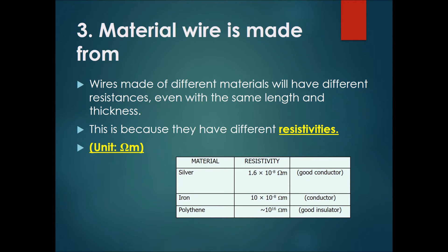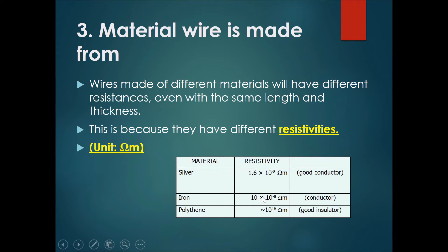The third factor is the material the wire is made from. Wires made of different materials may have different resistances even if they have the same length and thickness, because they have different resistivities. The unit for resistivity is the ohm meter. Resistivity refers to the innate resistance of the material. For example, silver is a very good conductor with a low resistivity of 1.6 × 10⁻⁸ ohm meters. Iron has a slightly higher resistivity of about 10 × 10⁻⁸ ohm meters. Polythene, a good insulator, has a very high resistivity of 10¹⁶ ohm meters.